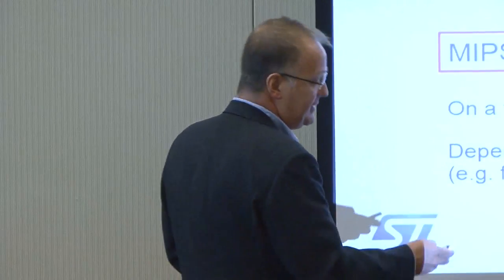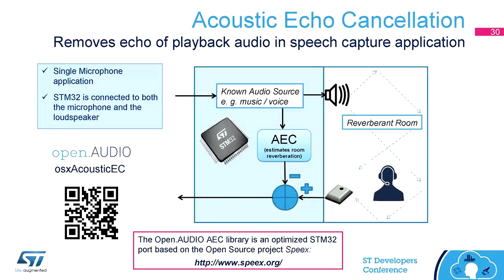Let's move to the other routine: acoustic echo cancellation. Basically, your system is capable of playing back music — has a microphone but also a loudspeaker, like the Amazon Echo and a number of other systems on the market. The STM32 knows exactly what audio is being sent to the output loudspeaker, and through acoustic echo cancellation processing, it can delete that captured audio from the voice track.